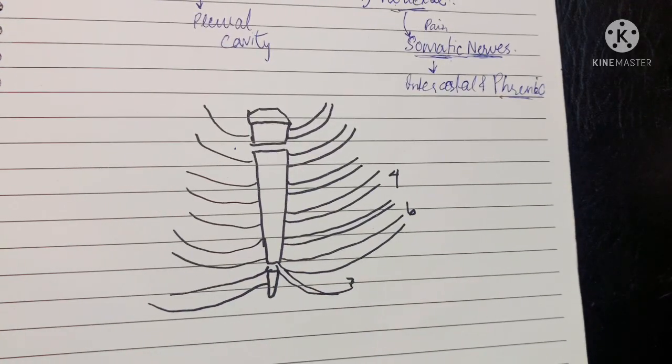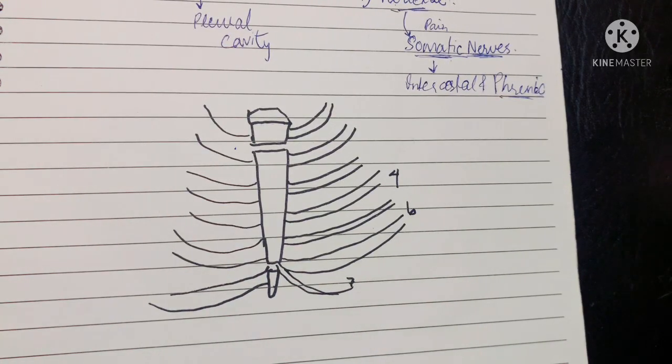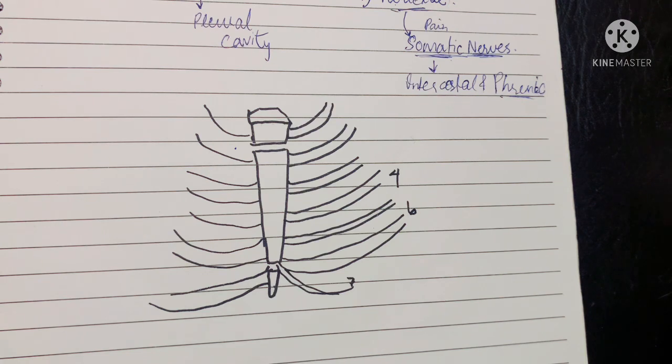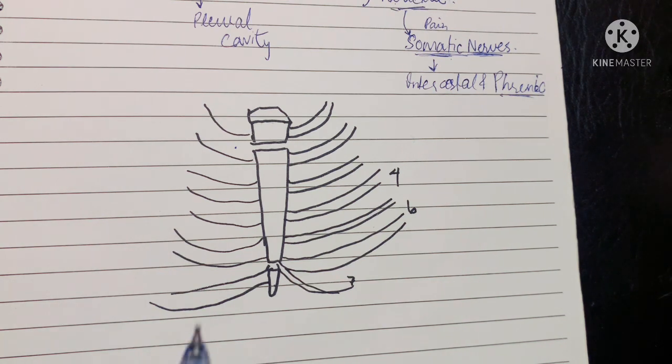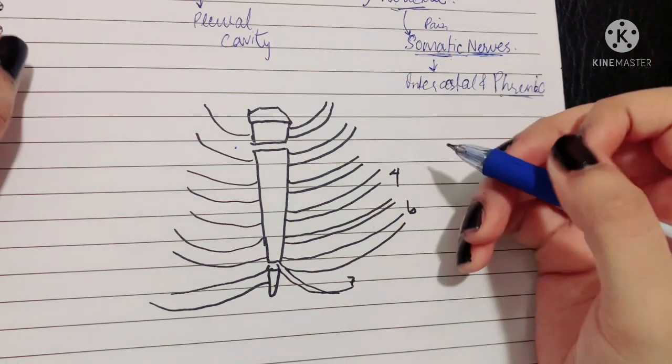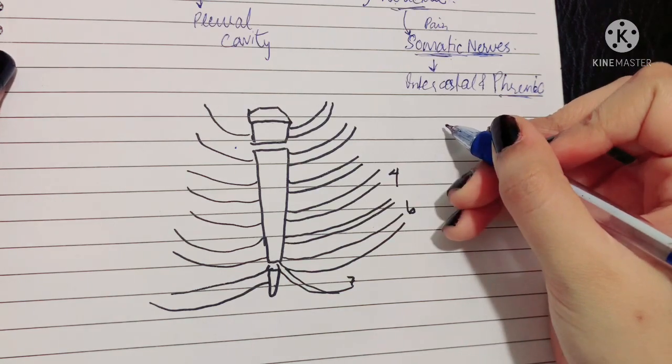Now let's talk about the surface marking of your pleura. What is surface marking? Surface marking means you have to tell the location of the organ exactly where it is located by using landmarks that are present on the surface of your body which you can see.